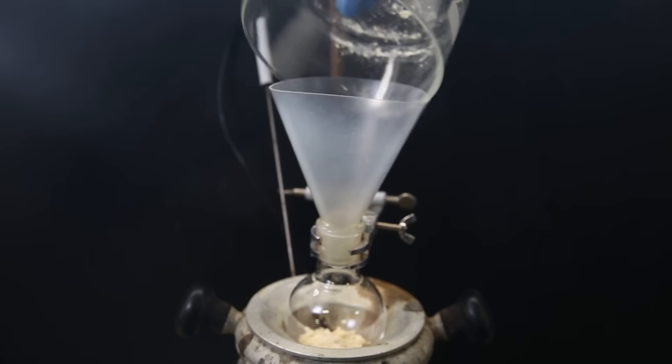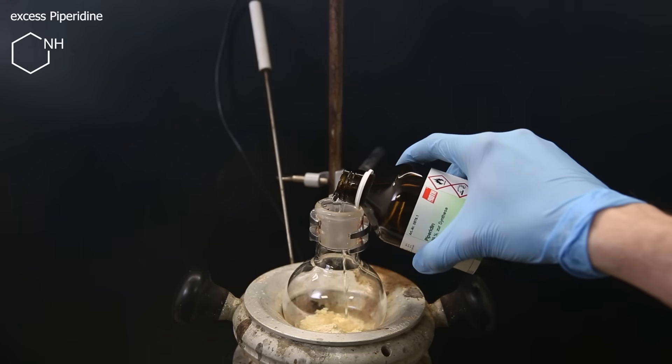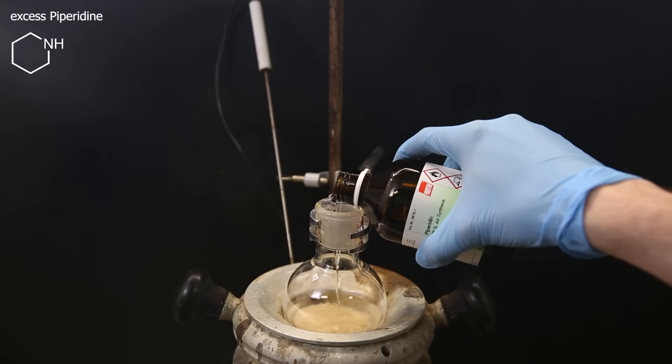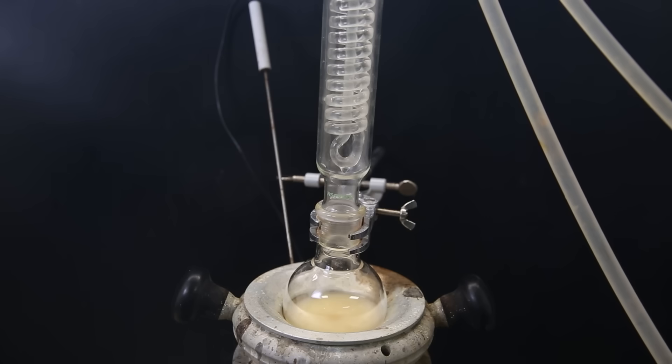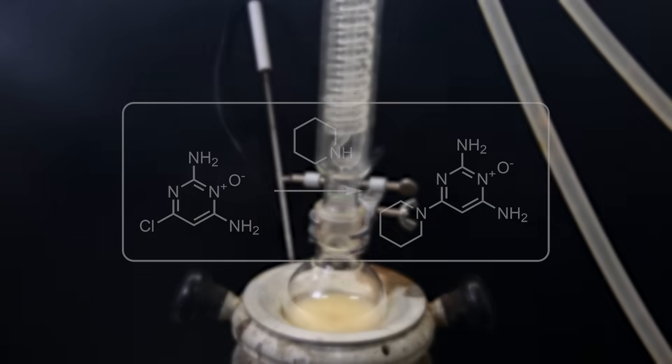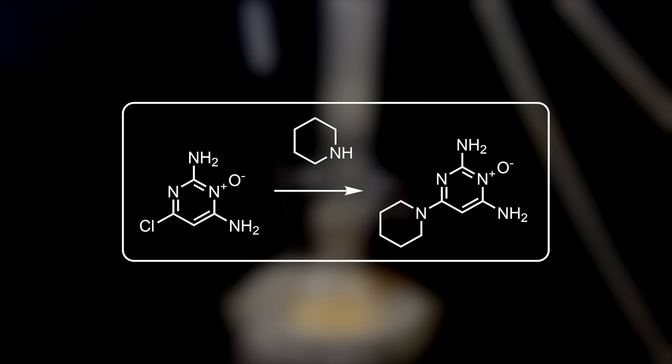To the material I add an excess of the base and reagent piperidine, around 50 ml. I then attach a condenser and heat it to a reflux and I leave that overnight. In this reaction piperidine reacts with the chloropyrimidine to give minoxidil. In this case the reaction only proceeds at reflux temperatures and a fair amount of time after we have done the N-oxidation. If we would try this before the N-oxidation it would fail as the heterocycle would be too deactivated.